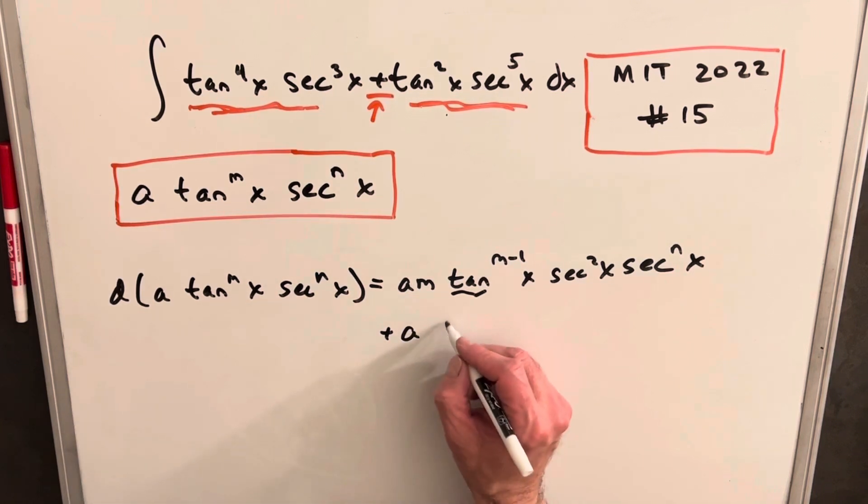And then for our second term, we're going to keep our a, we'll keep our tan m x. Then for our derivative of the secant term, we're going to have times n secant n minus 1 x. Then the chain rule derivative of the secant is going to be secant x tan x.